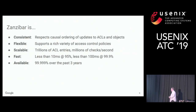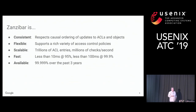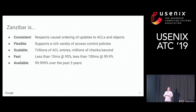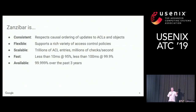Zanzibar has a number of notable properties that come from the requirements of a system like this. Zanzibar should be consistent — it needs to respect the causal ordering of updates to access control lists and object contents, so clients and users can reason about when permissions are present or not. This is very important for privacy.